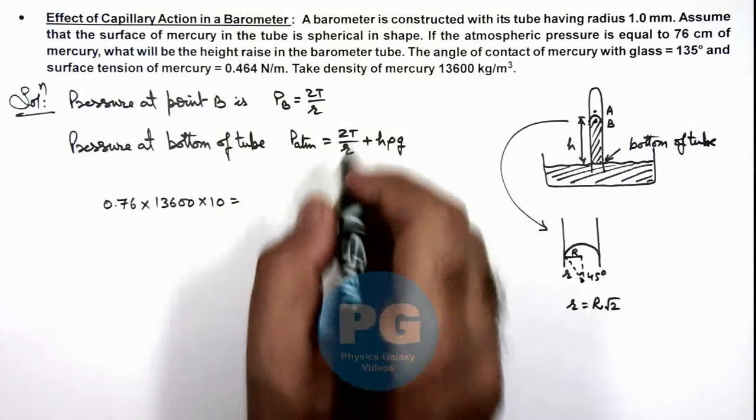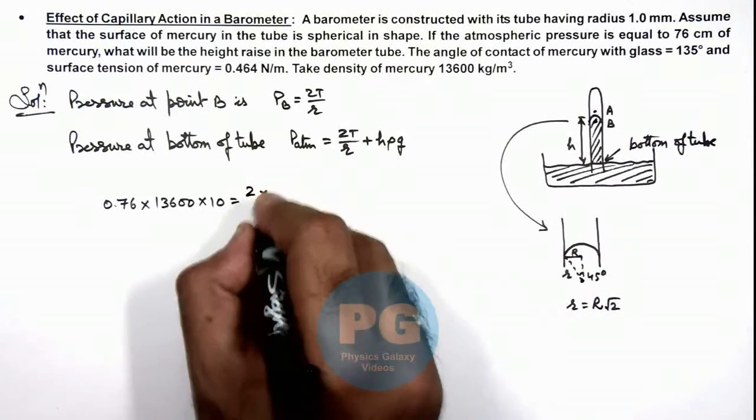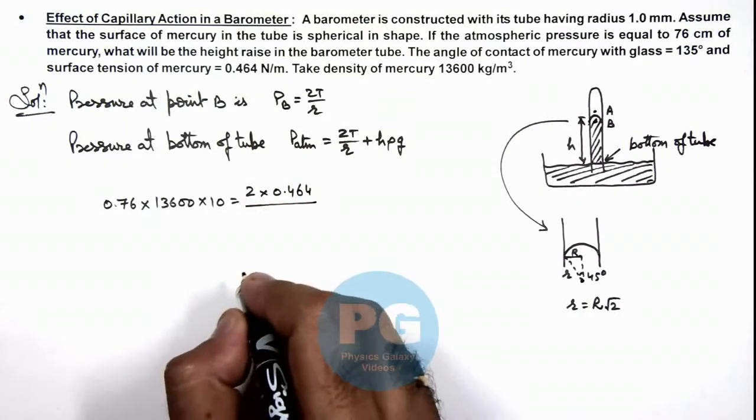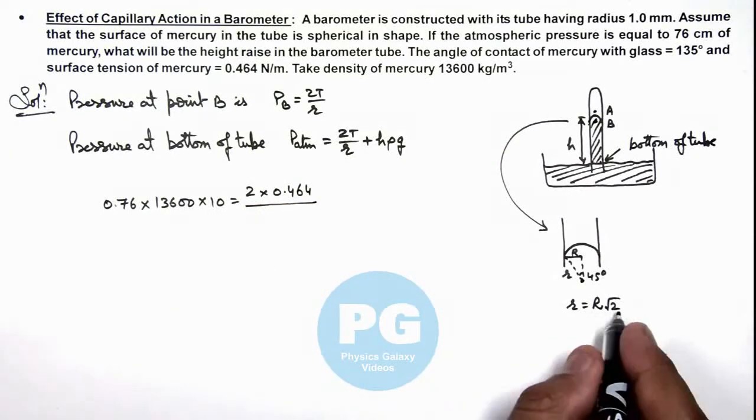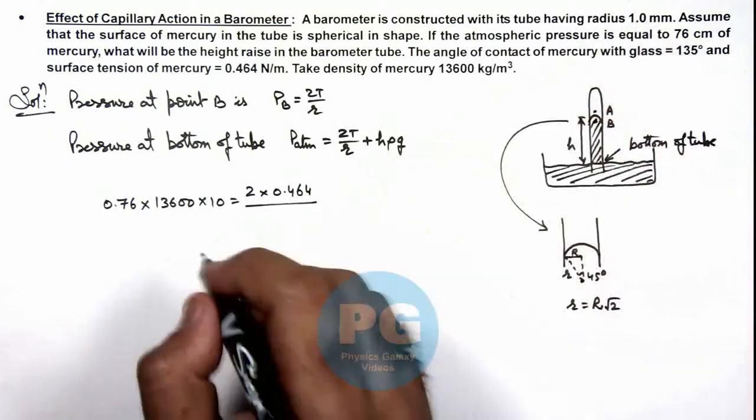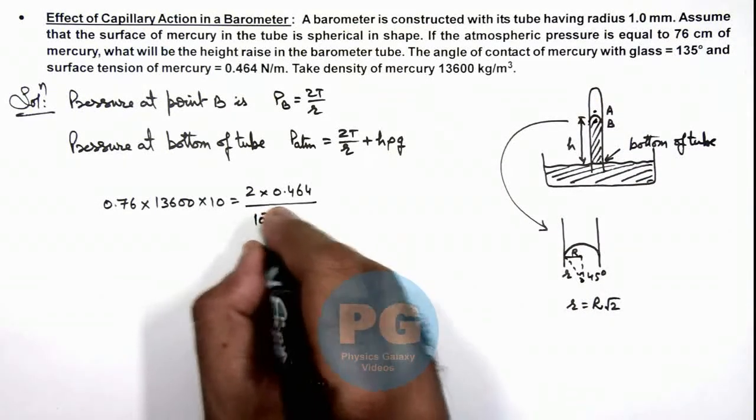Equals 2T by r, which is 2 multiplied by 0.464 divided by the radius of curvature, which is R root 2. The R value is given as 1 mm, so this is 10 to power minus 3 times root 2.